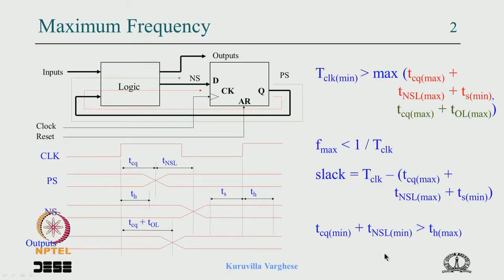A quick run through the slide, then we will start today's part. We have looked at the maximum clock frequency — we have to analyse two paths: one is the register to register path and the register to output path. We choose the maximum as the minimum clock period, and this output can go to some other register through a combinational circuit.